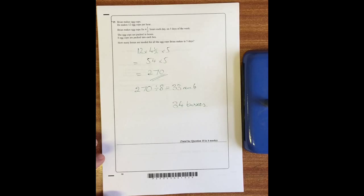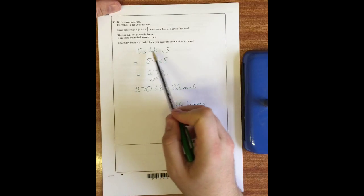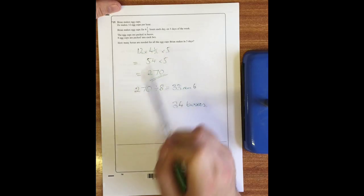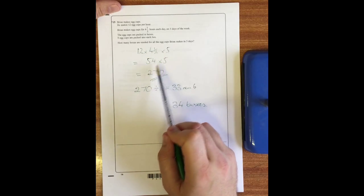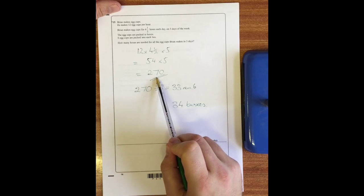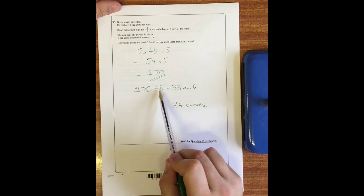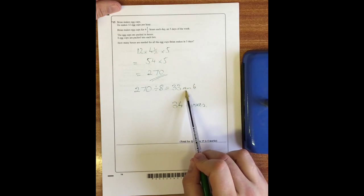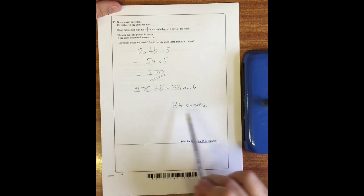Question 15: Brian makes egg cups. He makes 12 egg cups per hour. Brian makes egg cups for four and a half hours each day on five days of the week, and the egg cups are packed into boxes with eight egg cups packed into each box. How many boxes does he need for the five days? Well if he makes 12 every hour for four and a half hours over five days, we do 12 times four and a half times five. Again you can use a calculator for that, but I've done that in two stages which will give me 270. There are then eight in each box, so 270 divided by eight gives me an answer of 33 remainder six, or 33.75 if you did it on a calculator. That means you must need 34 boxes.